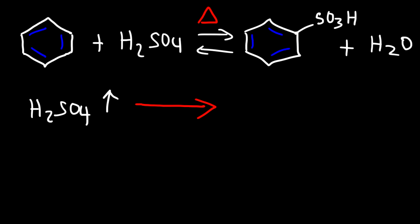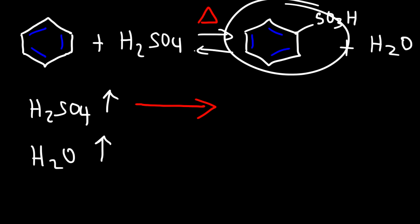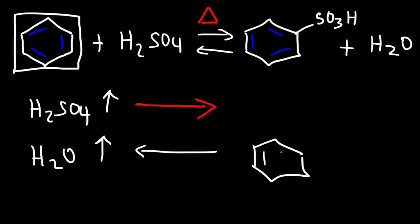Likewise, if you want to favor desulfonation and produce benzene, then you need to increase the concentration of the product — in this case, water. So if you increase the concentration of water and react it with benzene sulfonic acid, based on Le Chatelier's principle, you will drive the reaction to the left, producing benzene. This reaction is basically controlled by concentration: concentrated sulfuric acid favors the formation of benzene sulfonic acid, and a dilute concentration of water and acid favors the formation of benzene.